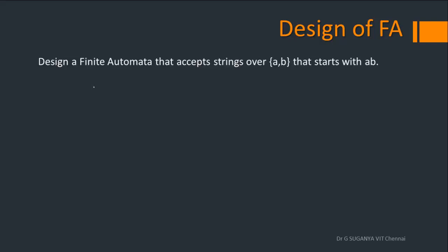The first problem: design a finite automata that accepts strings over {A, B} that starts with AB. First, find sigma — the input symbols permitted, which is clearly {A, B}. Next, define the language by listing all words that are part of it. Start with the minimal length string: since the string must start with AB, the minimal length string is AB.